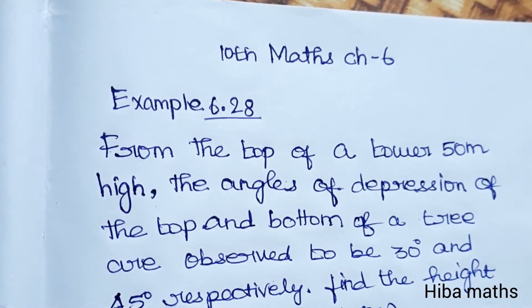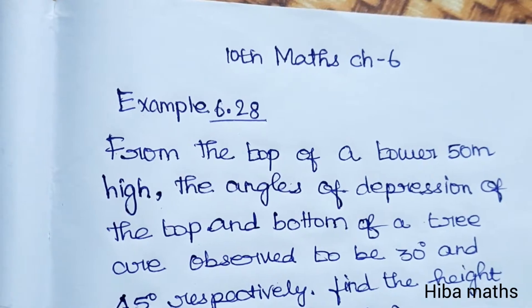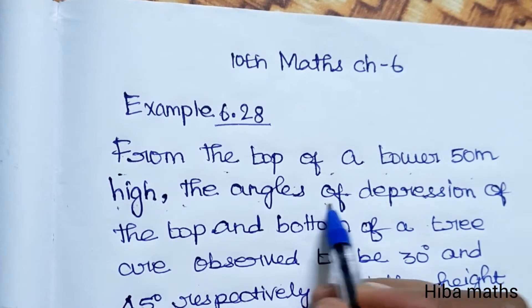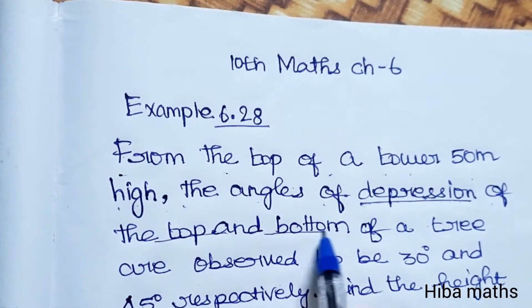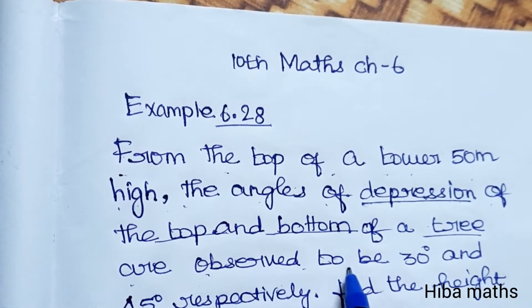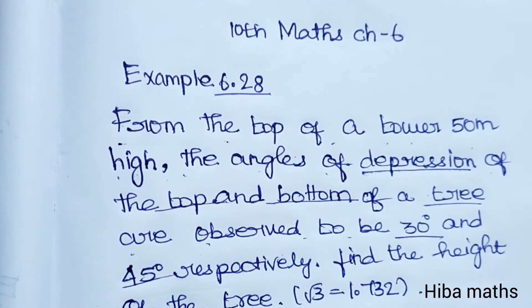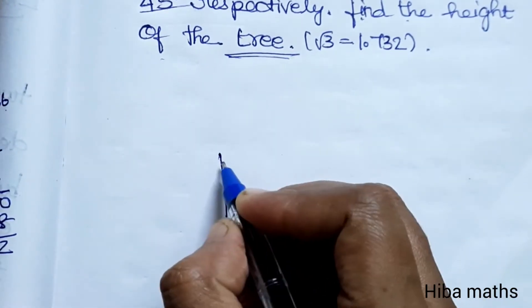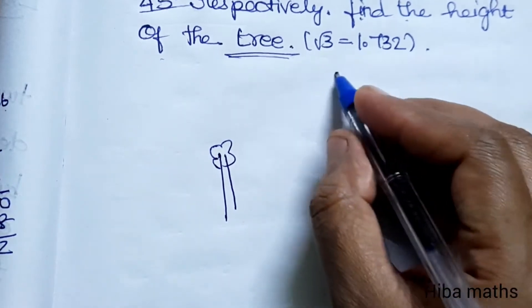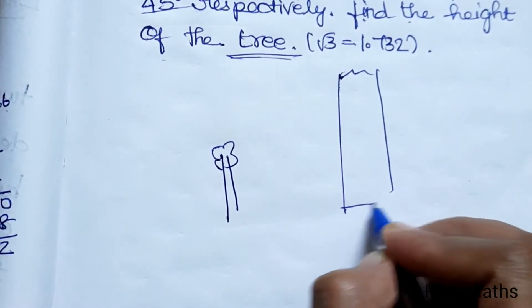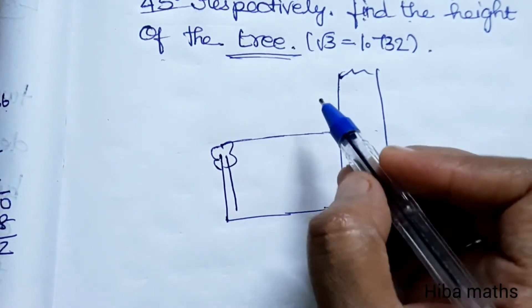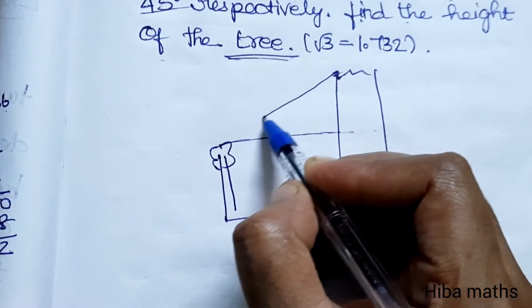Hello students, welcome to HIBA Max 10 Standard, Chapter 6, Example 6.28. From the top of a tower 50 meters high, the angles of depression of the top and bottom of a tree are observed to be 30 degrees and 45 degrees. Find the height of the tree.